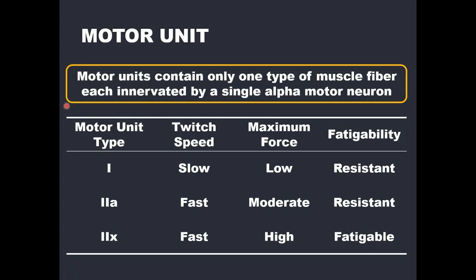So first, let's recap what a motor unit is. A motor unit is a single alpha motor neuron and all the muscle fibers or cells it innervates or connects to via the neuromuscular junction. A motor unit contains only one type of muscle fiber, each innervated by a single alpha motor neuron. The type of muscle fiber contained within the motor unit determines the type of motor unit. Therefore, motor unit type is interchangeable with muscle fiber type since they both go hand in hand.